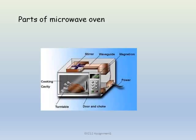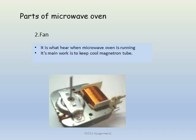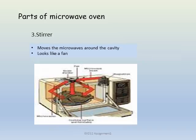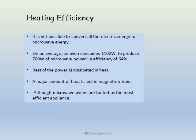Now we will look at the various parts of a microwave oven. The first part is the magnetron — it is the main component, transforms electricity into microwave energy, and looks like a radio or TV tube. Another part is the fan, which keeps the magnetron tube cool while the oven is running. The stirrer moves the microwaves around the cavity and looks like a fan. The waveguide is a pipe that carries microwaves from the magnetron to the cavity. Regarding heating efficiency, it is not possible to convert all electric energy to microwave energy. On average, an oven consumes 1100 watts to produce 700 watts of microwave power — an efficiency of 64%. The rest of the power is dissipated as heat, with a major amount lost in the magnetron tube, although microwave ovens are touted as the most efficient appliance.